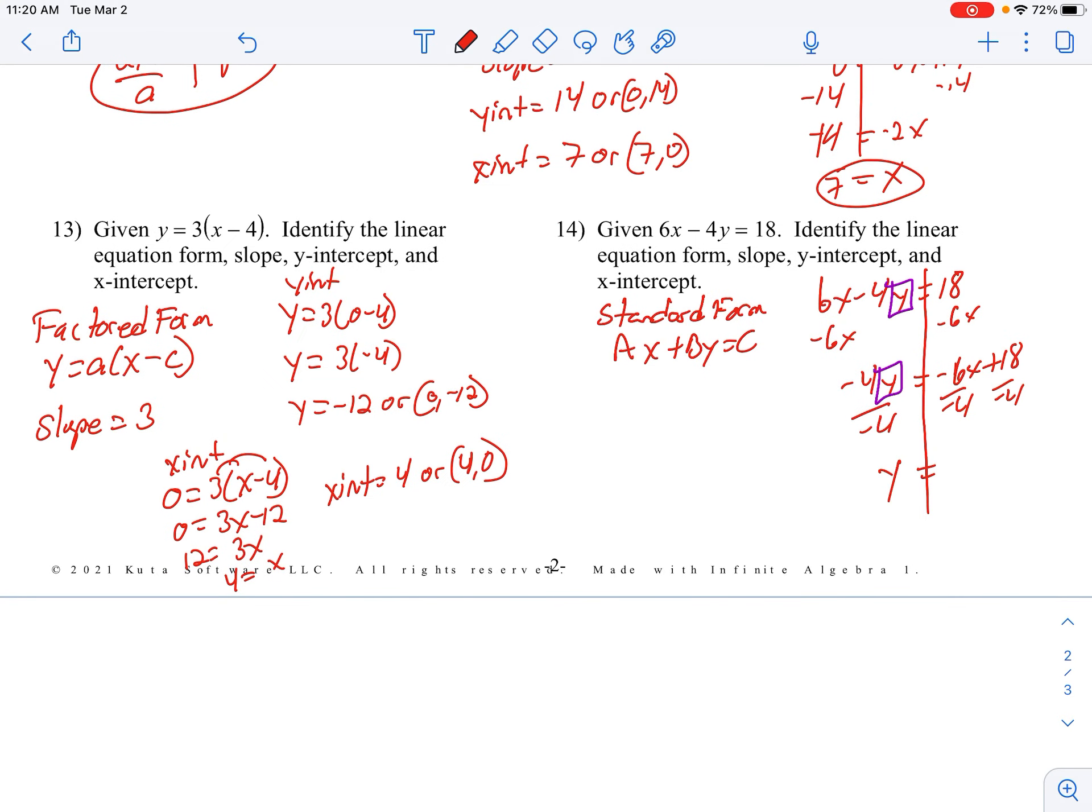And Y equals, okay, negative 6 divided by negative 4. Two negatives make a positive, reduce it by 2. We get 3 halves X. 18 divided by negative 4, reduce that by 2. We get negative 9 halves. So what we just found then was the slope to be 3 halves.